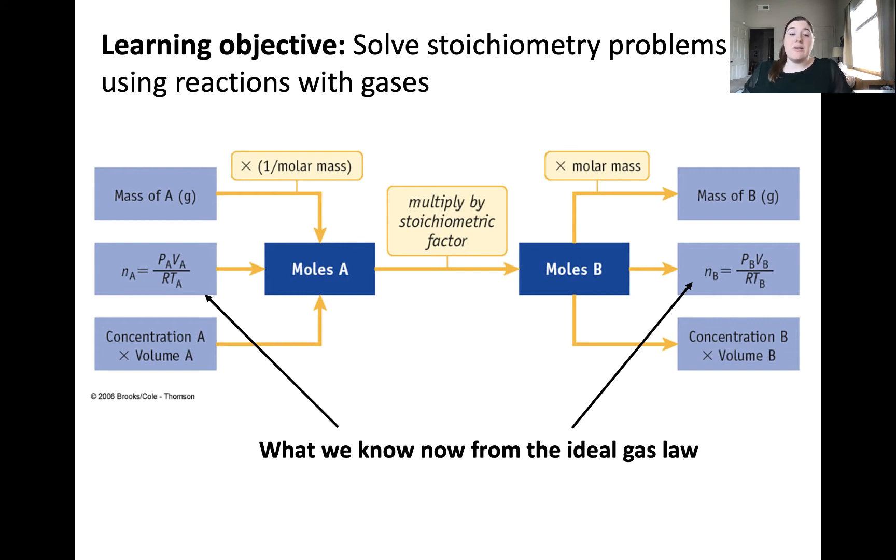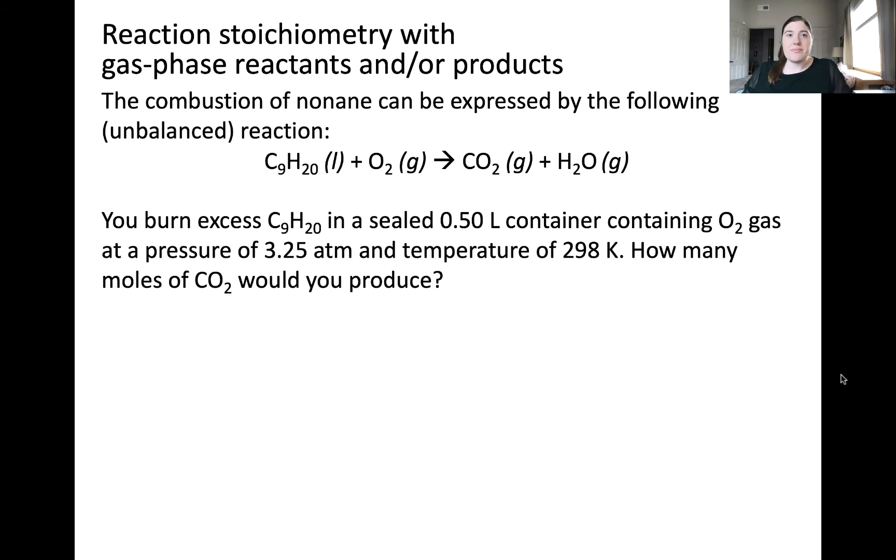Importantly, these conversion factors can only be used for gas phase species. The ideal gas law can be used to solve stoichiometry problems in this way with gaseous species. Let's look at an example problem. Here's the chemical reaction for the combustion of nonane in oxygen to yield gaseous carbon dioxide and water vapor.